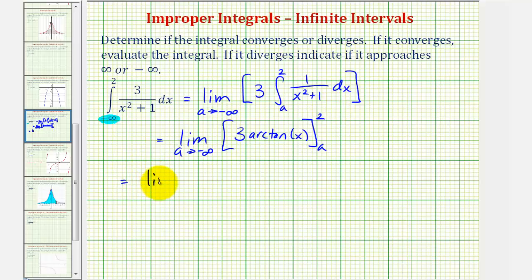So now we'll have the limit as a approaches negative infinity of three arctangent two minus three arctangent a.